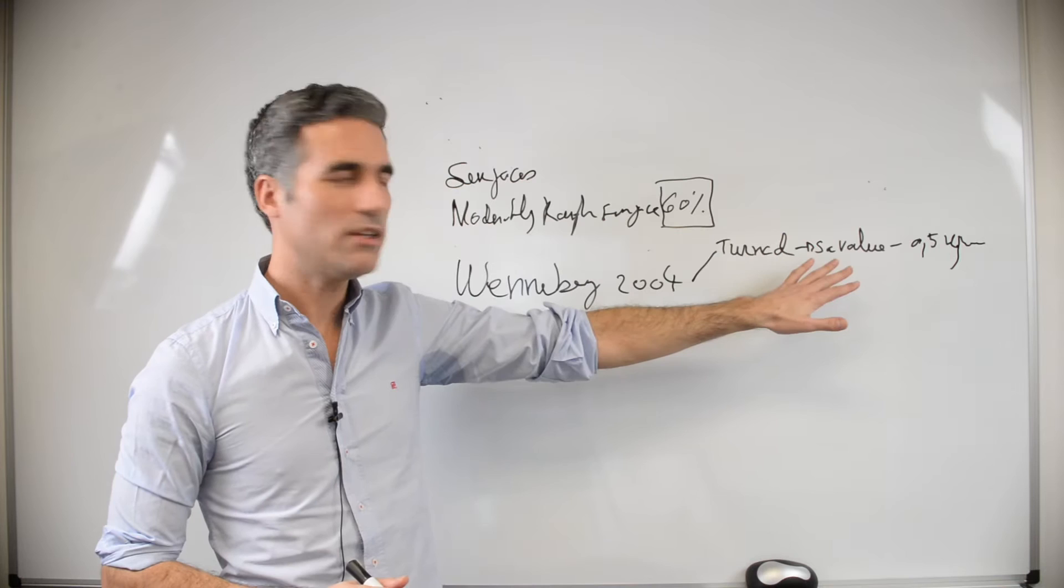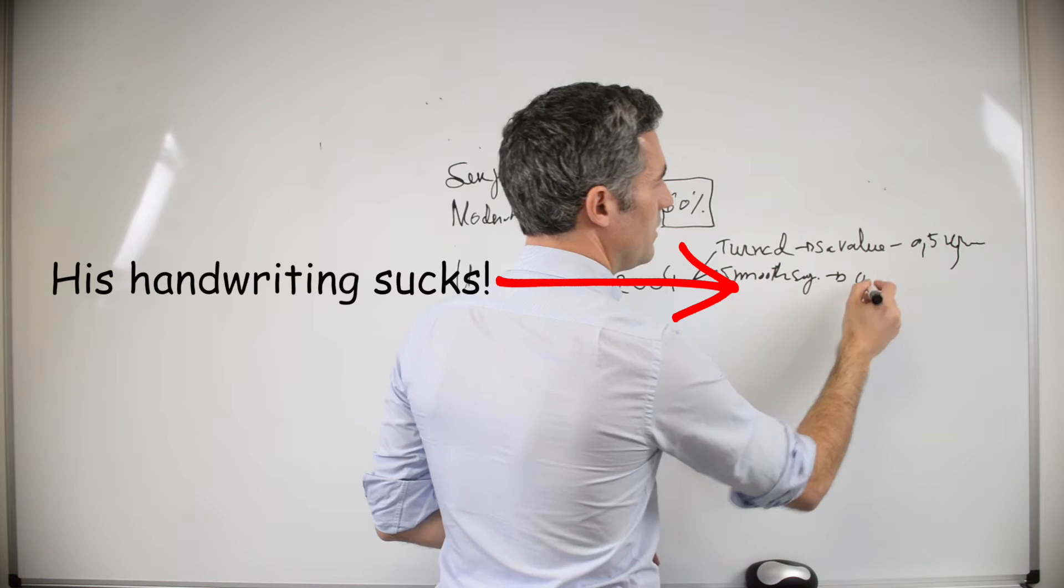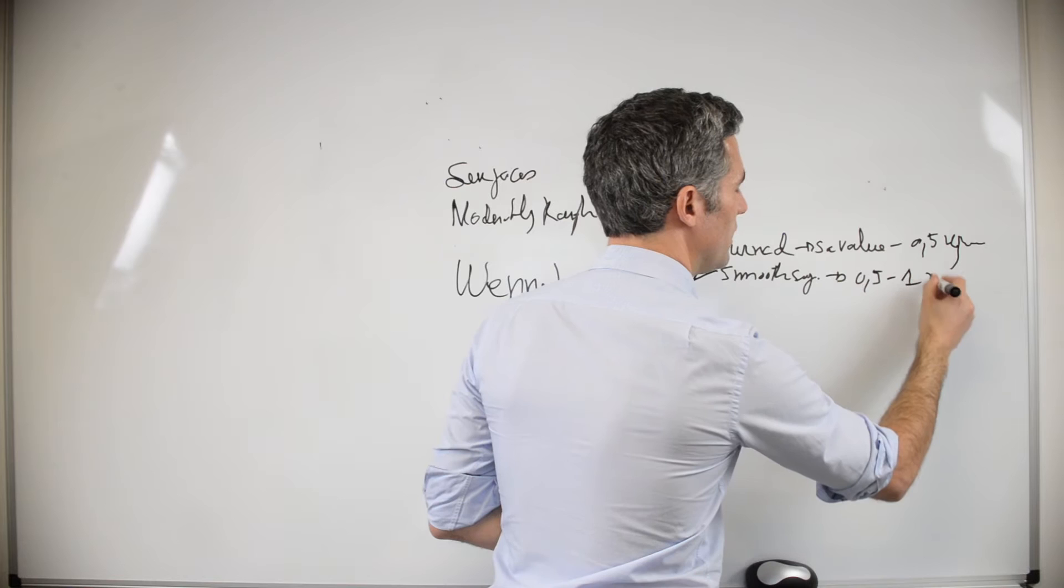This is the value for the turned surface. There are other surfaces that are the smooth surfaces. They have an SA value between 0.5 and 1.